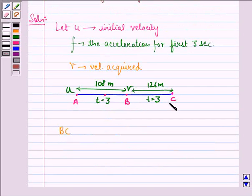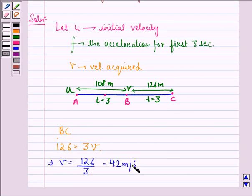Hence for BC we have distance 126 equals time 3 into speed v. This implies v equals 126 divided by 3, which equals 42 meters per second.